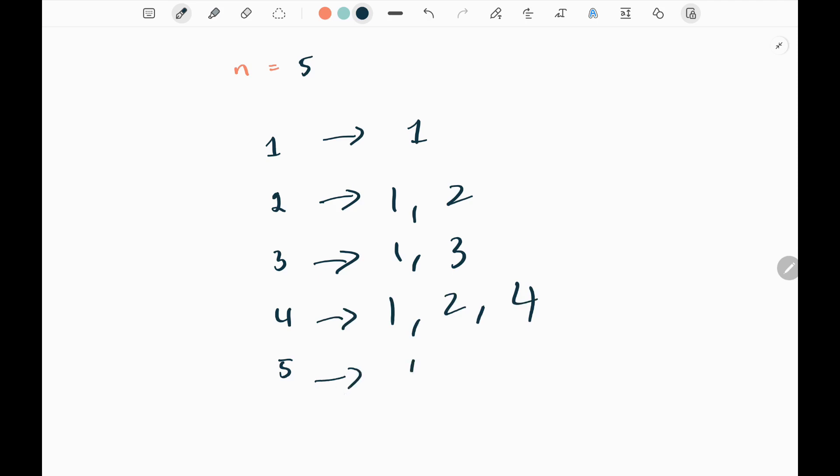For five, it's one and five. Now we need to see how many numbers have an odd number of factors. One has only one factor, which is odd, so I count it as one.